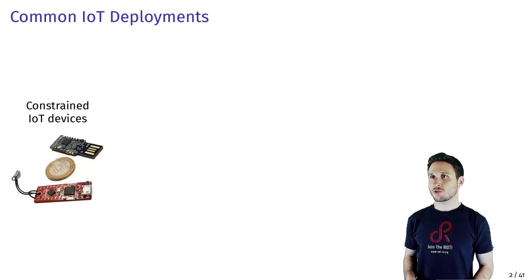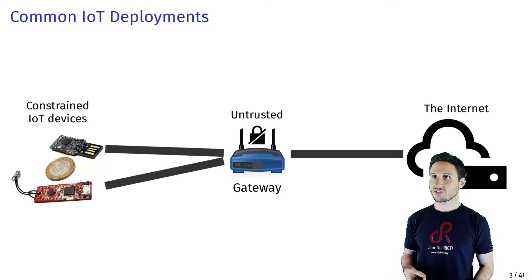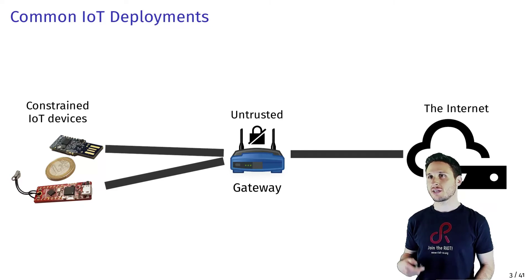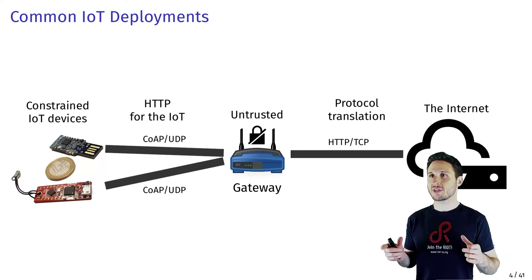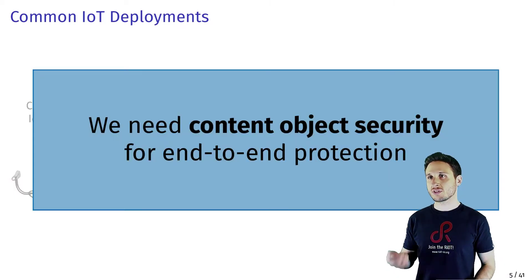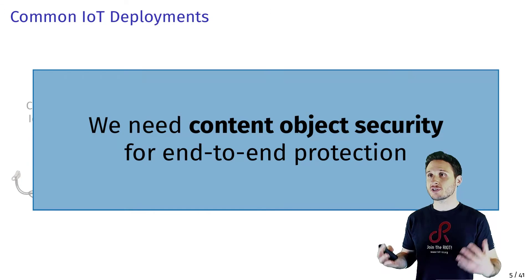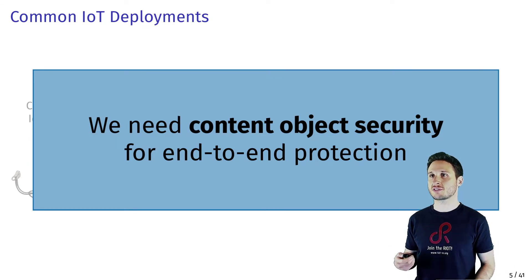If we look at the common IoT deployment, we see they consist of resource-constrained devices that connect to cloud services through potentially untrusted gateway nodes. These gateway nodes perform protocol conversions, for example from UDP to TCP, which means we can't use transport layer security between the end device and the cloud. One solution that enables end-to-end protection and goes beyond the reach of the gateway is to use content object security.